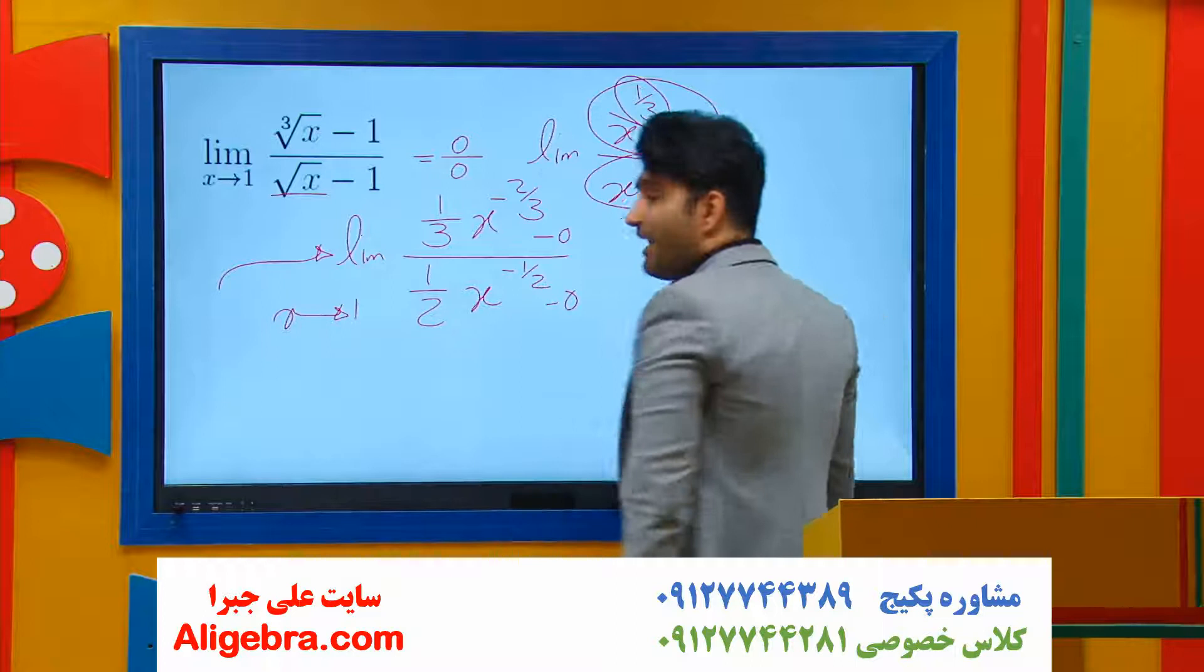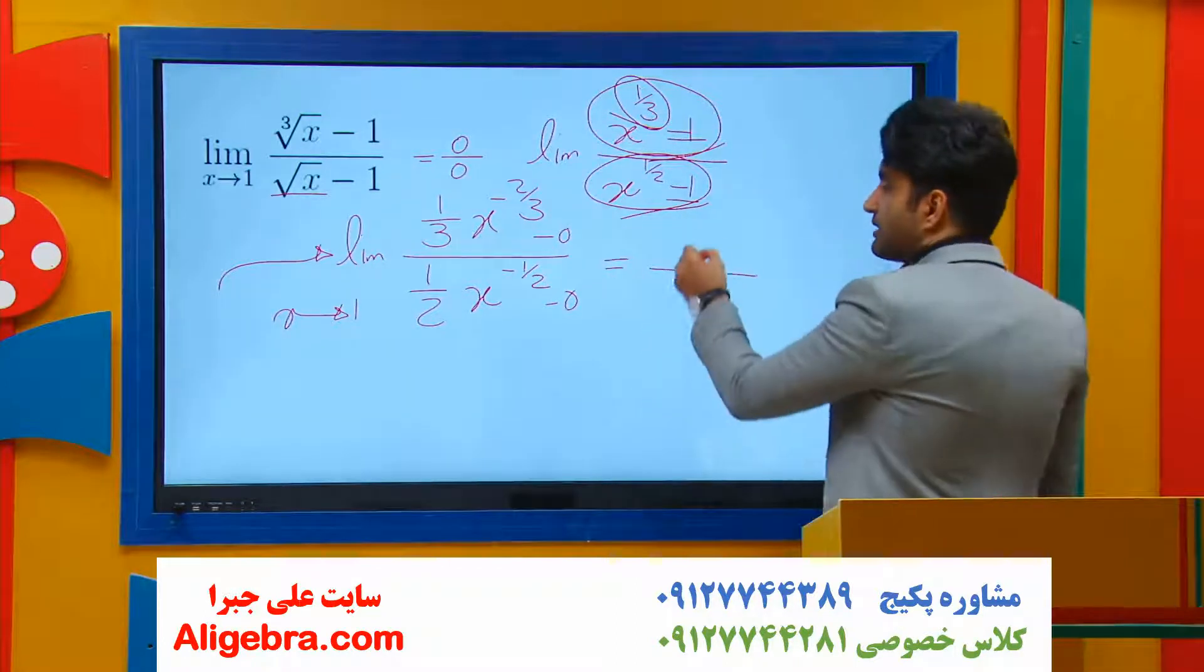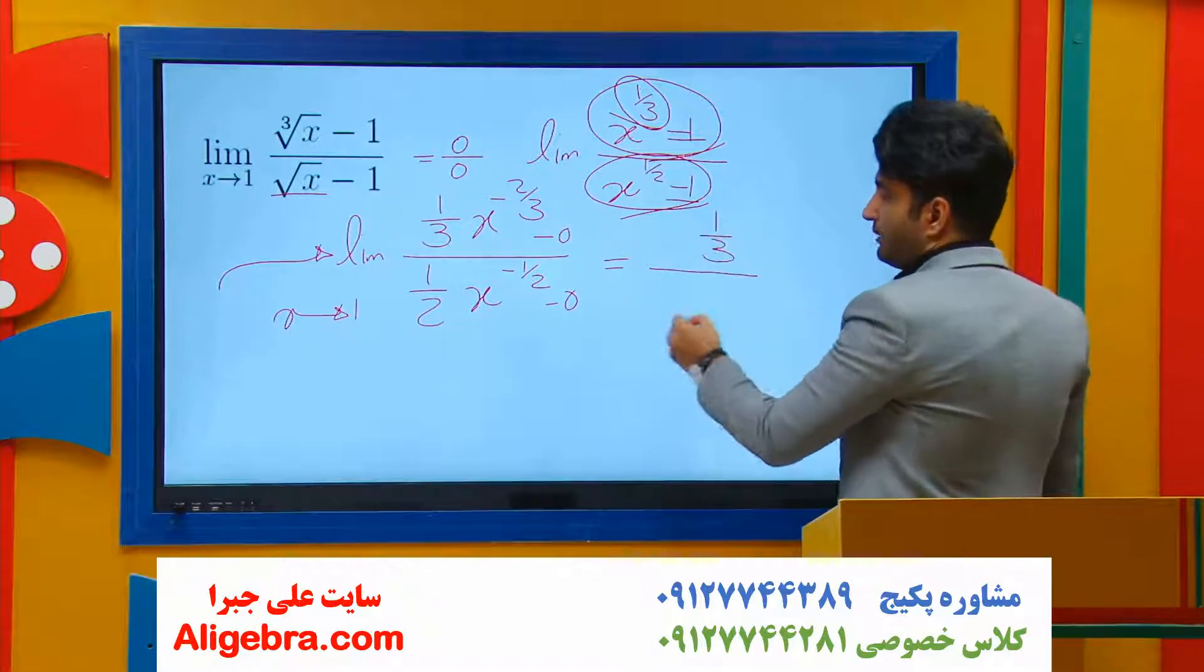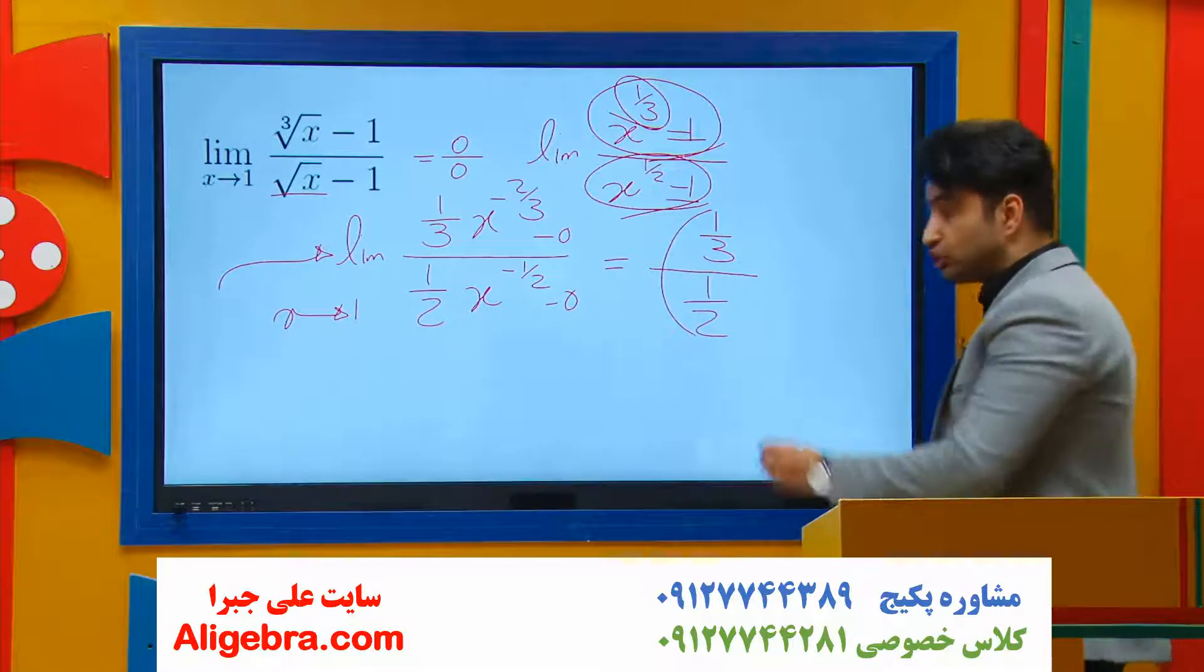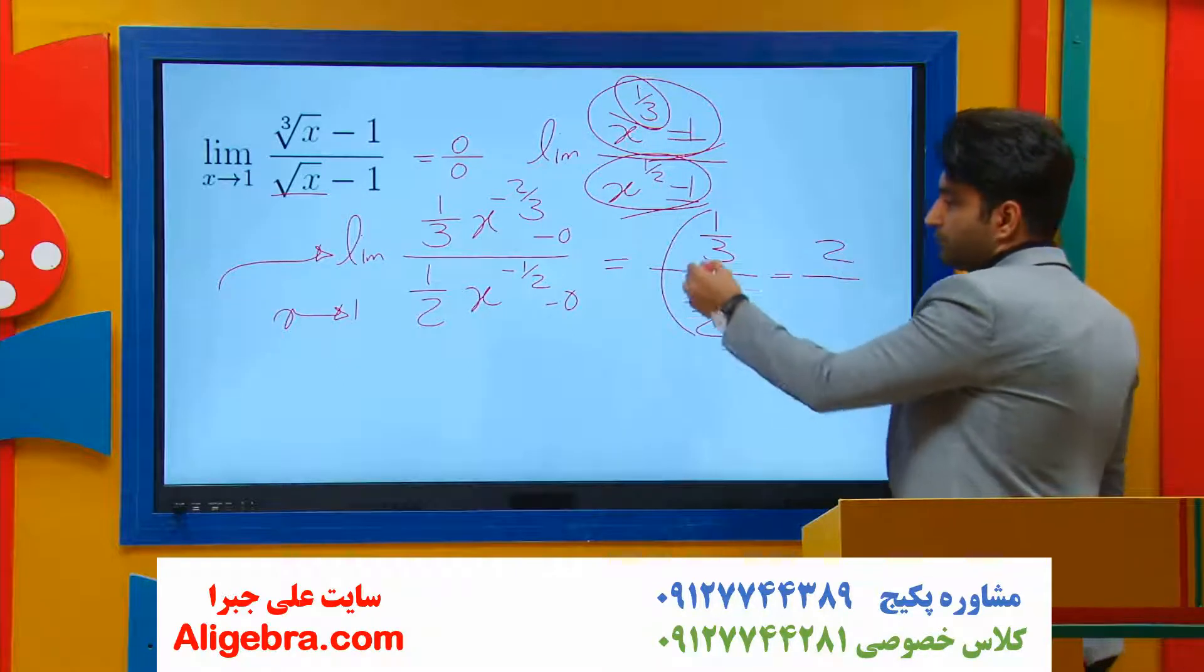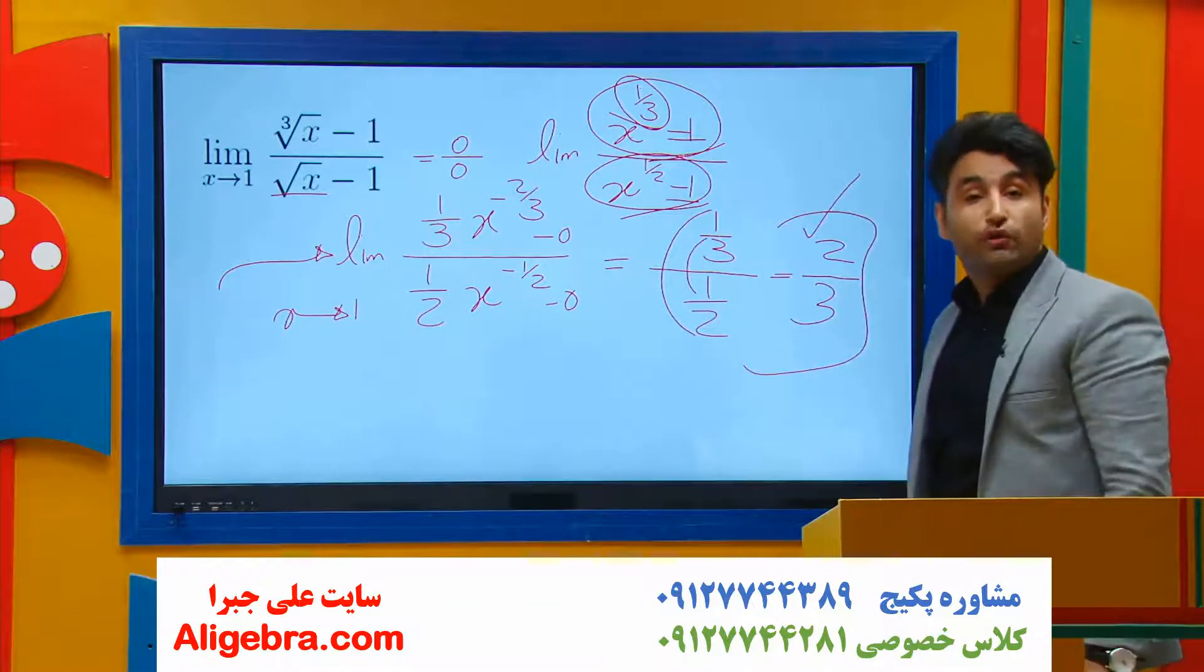Now use direct substitution again. If I replace x with 1 on top, I have 1 over 3, and on the bottom, 1 over 2. The product of 1 and 2 goes on top, and the product of 1 and 3 goes on the bottom. So the answer is 2 over 3.